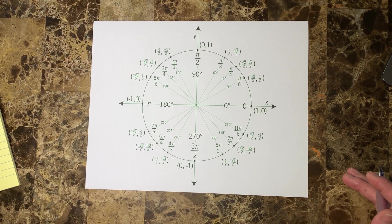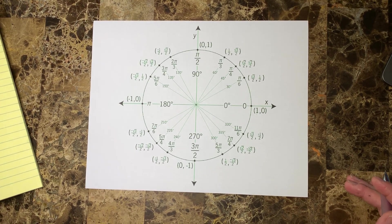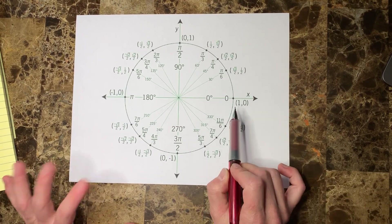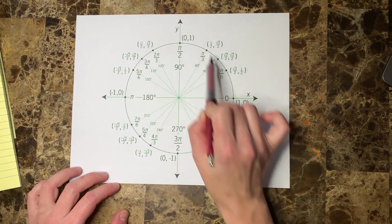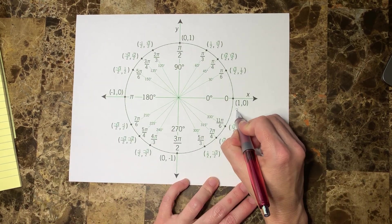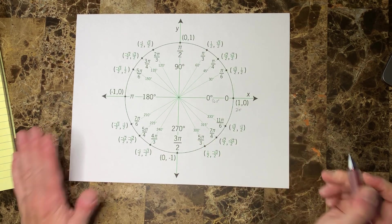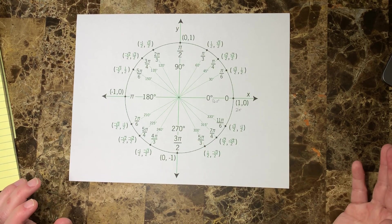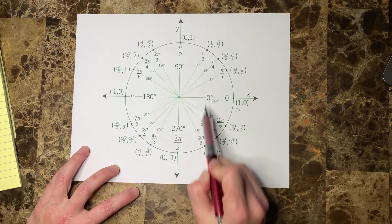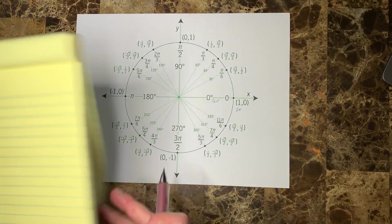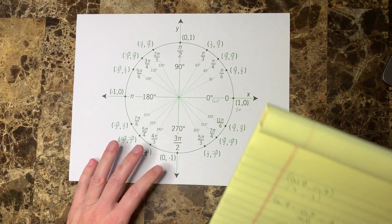Now the second part of this: this unit circle accounts for one rotation, right, from zero to 2π or from zero to 360 degrees, but you can go more than that. You can go around this circle an infinite number of times. It's called the wrapping function.